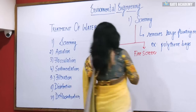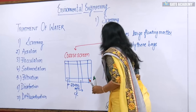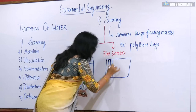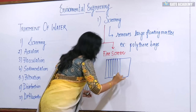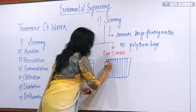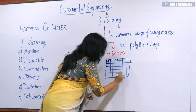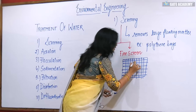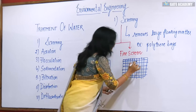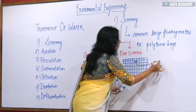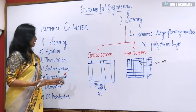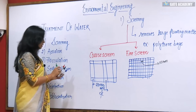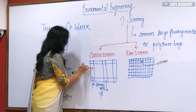Similarly, we use fine screens. Fine screens have very minute pores in them, as the name suggests. The size of the pores — or the mesh opening — is 10 mm for the fine screen. For the coarse screen, the distance between bars center to center is 20 to 100 mm and the diameter of the bars is generally 20 to 25 mm.